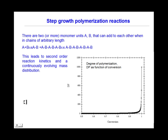Another type of polymerization reaction is step growth. Here, two or more monomer units can add to each other when in chains of arbitrary length. This leads to second-order reaction kinetics and a continuously evolving mass distribution. As shown in the graph on the right, the degree of polymerization is shown as a function of conversion for a step growth reaction, and one can see that the reaction needs to reach a high level of conversion in order to obtain high molecular weight polymer.